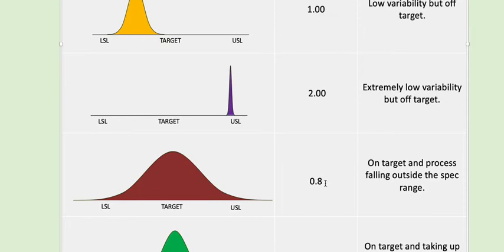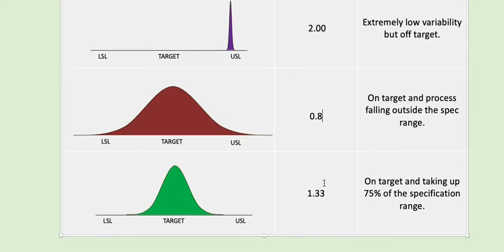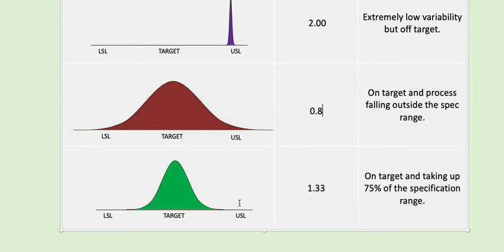The last one is kind of middle of the road. We've got pretty good targeting, a little bit more variability than some of the other ones we've seen, and this has a Cpk of 1.33.